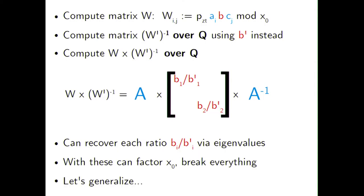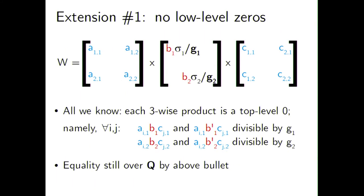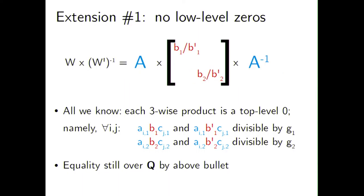Our first extension removes the assumption of low-level zeros. Now we only know that products of one element from each set are zero at the top level — but the A_i encodings themselves are not necessarily zero. The matrix equation now has G_i factors remaining. However, since we still have equality over the rationals (the products are divisible by G_1 and G_2), when we perform the same invert-and-multiply trick, the G factors cancel just like the other system parameters. So essentially the same attack works without low-level zeros.